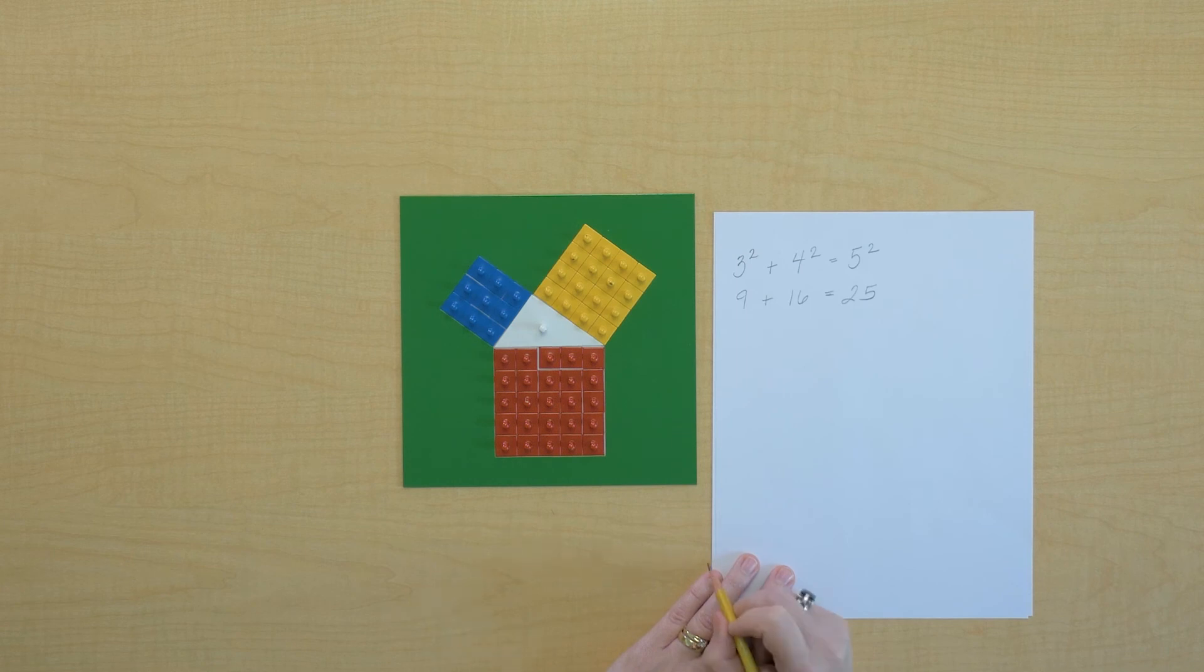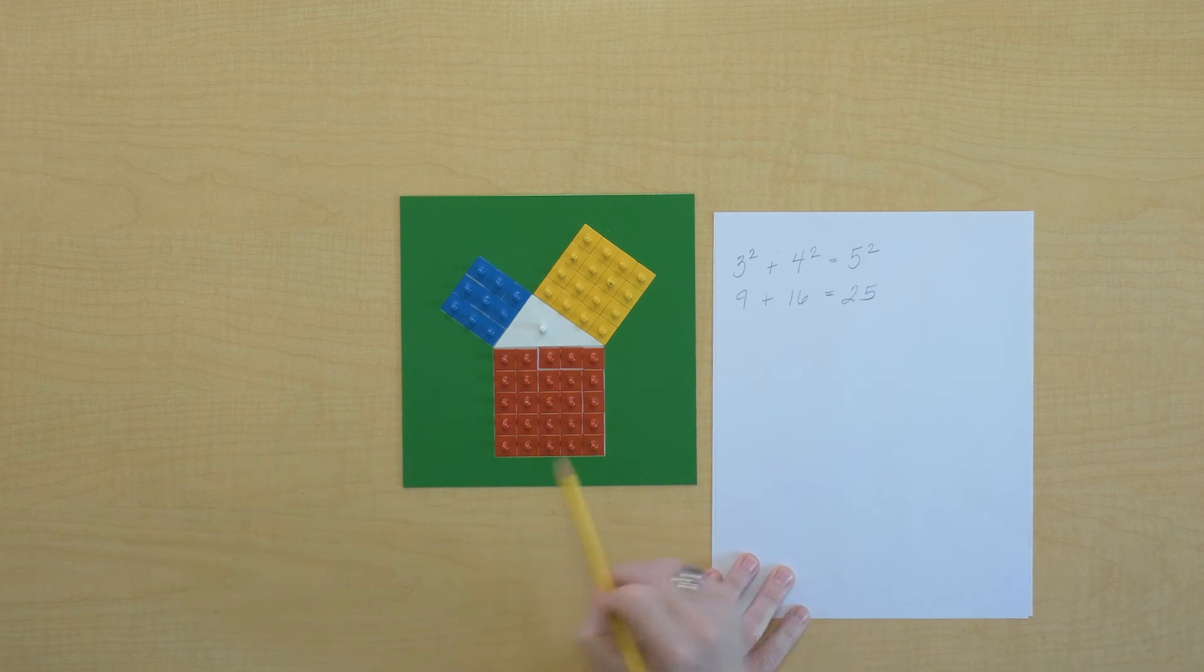That's true. So Pythagoras was right. The square built, not only did they all fit, but we can check it with our arithmetic as well.